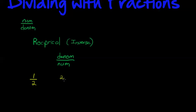So if I have a half, the reciprocal is 2 over 1. The reciprocal and the original are not the same value at all — a half and two ones are not the same. They don't have the same value, but there is something important about them.